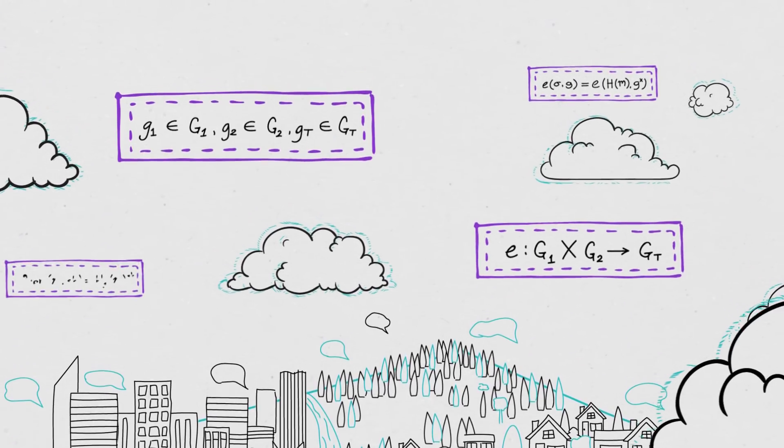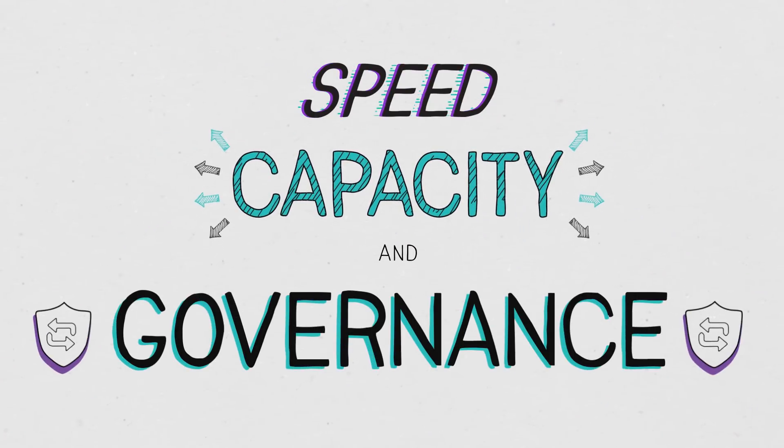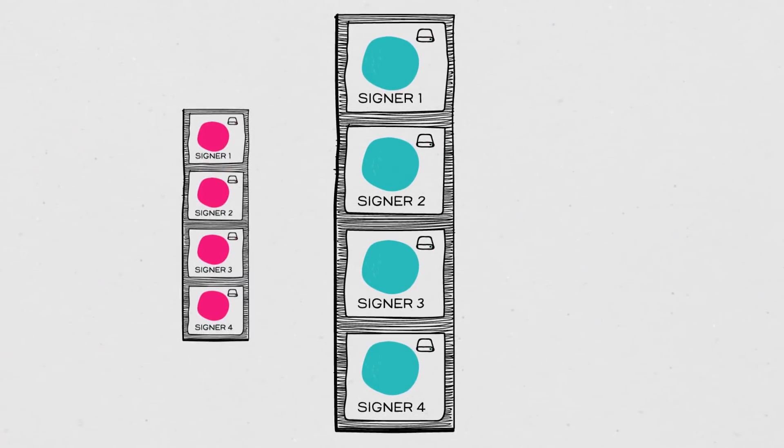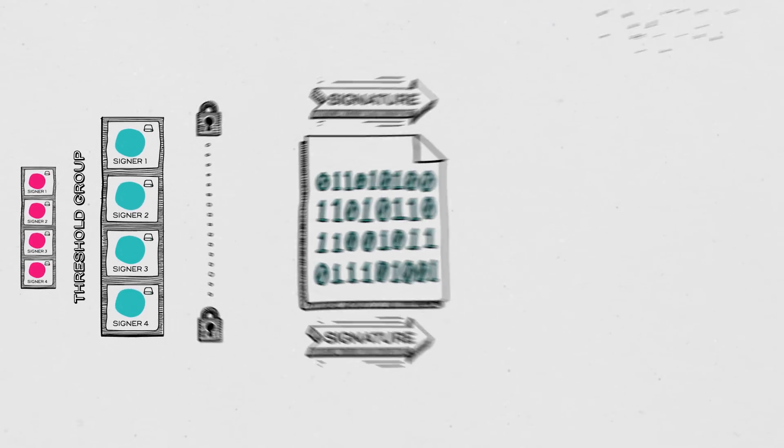DFINITY employs new math and innovations that deliver dramatic advancements in speed, capacity and governance. It starts with a revolutionary approach to building a blockchain. Powered by threshold cryptography and cryptographically sound randomness.